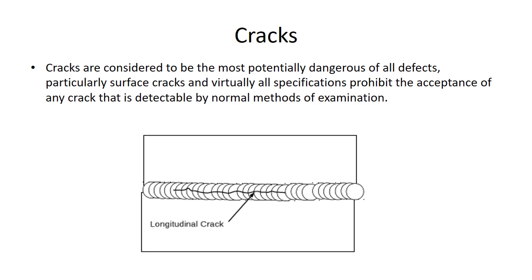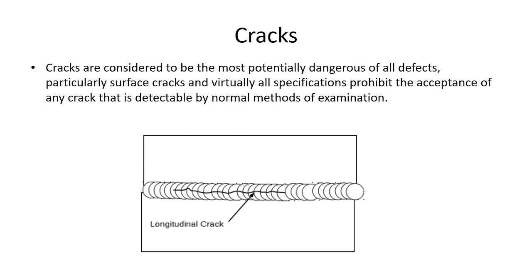That's telling us cracks aren't good — you're not going to have a crack that's acceptable. AWS D1.1, the structural code: cracks are not acceptable. The ASME codes: cracks are not acceptable. Cracks occur in various directions and locations. Factors causing cracks include temperature gradients that cause thermal stresses in the weld zone during solidification and contraction of the weld bead and surrounding structure, variation in the composition of the weld zone, embrittlement of grain boundaries, and the inability of the weld metal to contract during cooling.